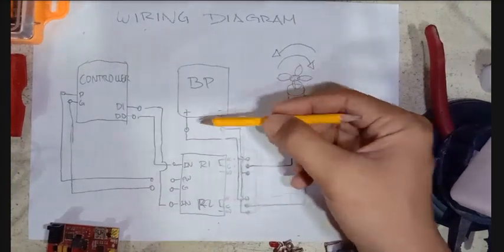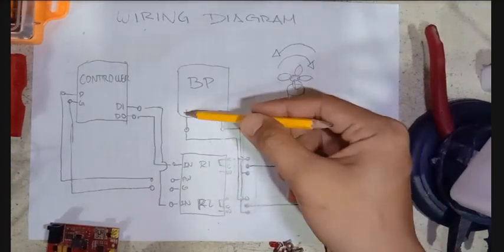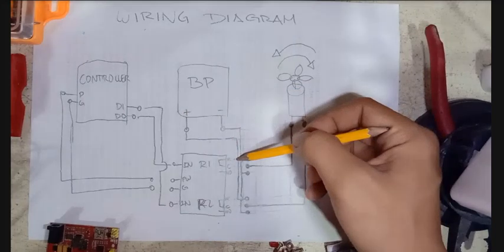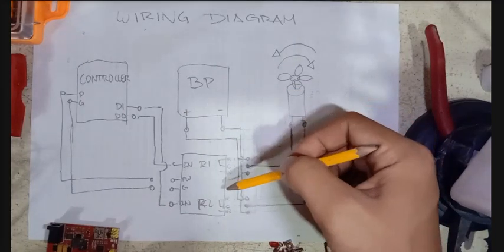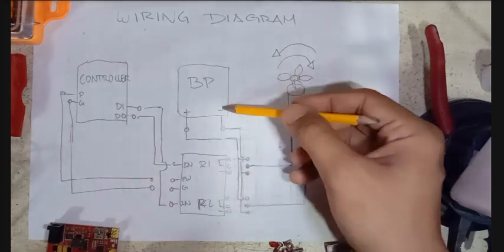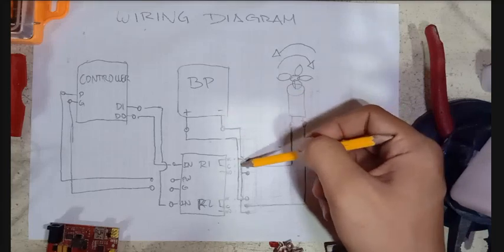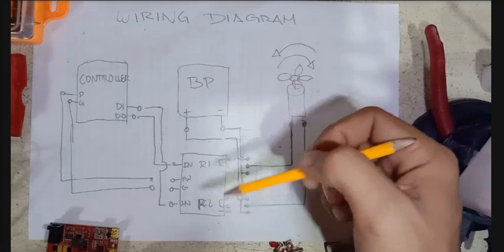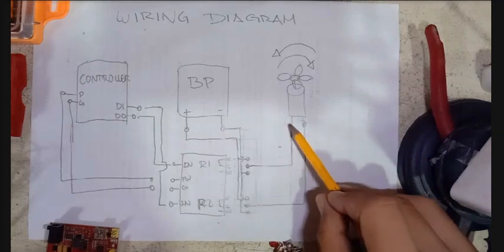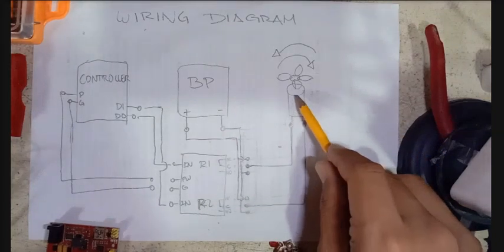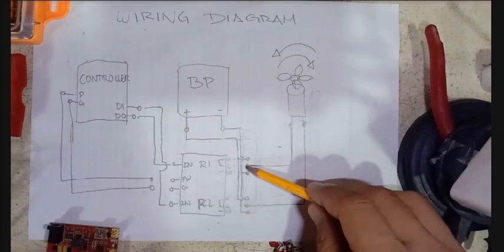I connected the positive terminal to normally closed of both relays and I connected the negative terminal to normally open of both relays. And I connected the two wires from our rotator to both common of our relays.